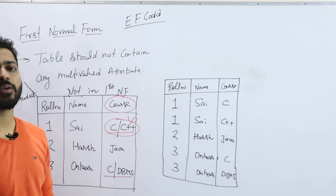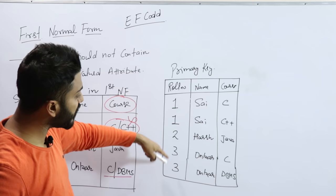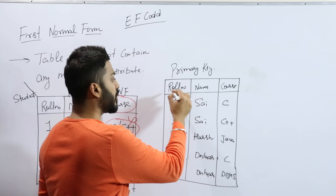If someone asks you what will be the primary key in this table, you can clearly check that roll number has repeating values so it cannot be a primary key. Name cannot be a primary key. Course - yes, course can be, but course alone is not a primary key because C values are repeating.